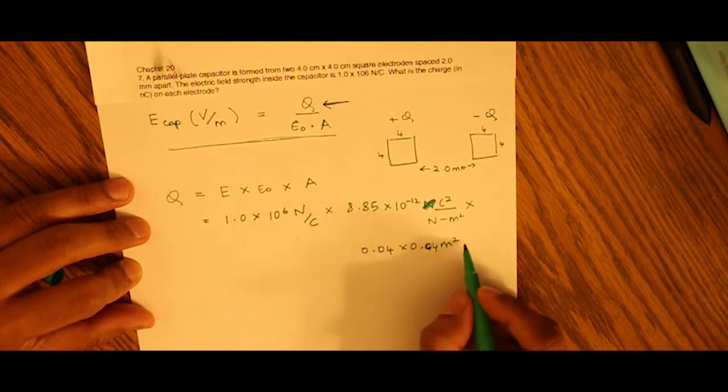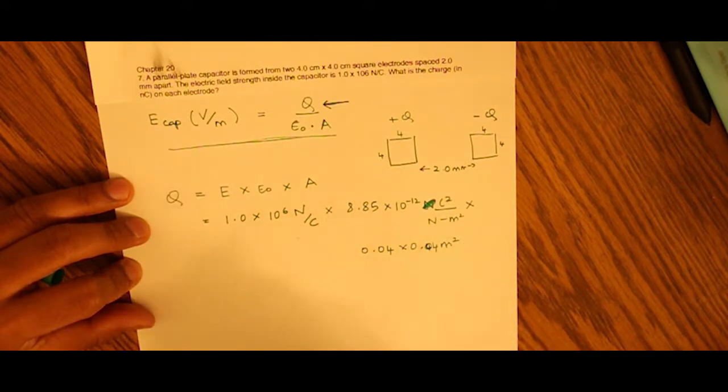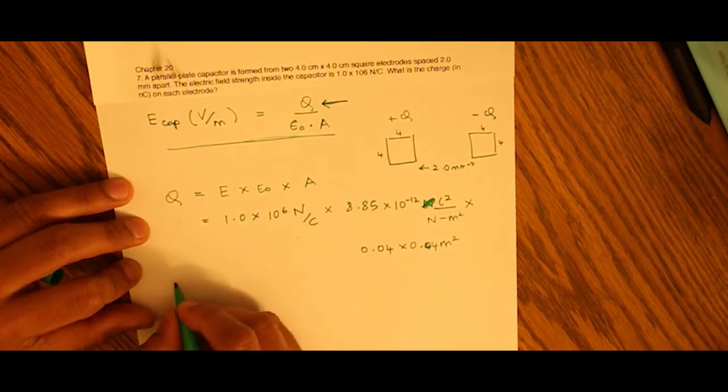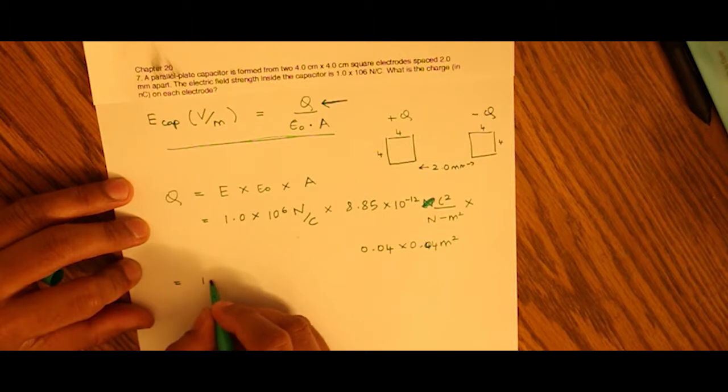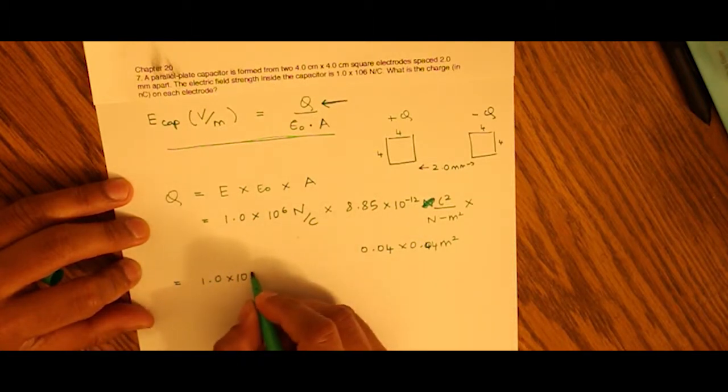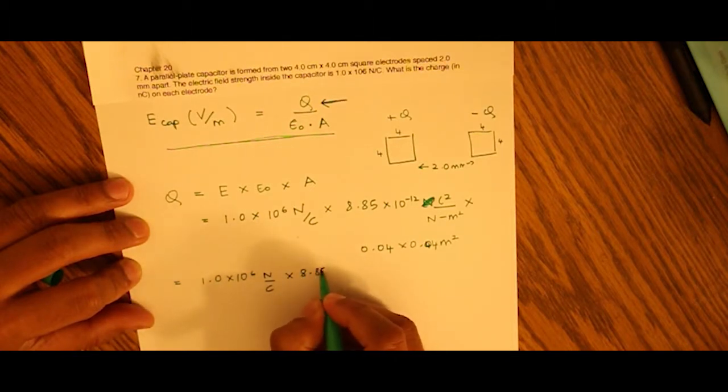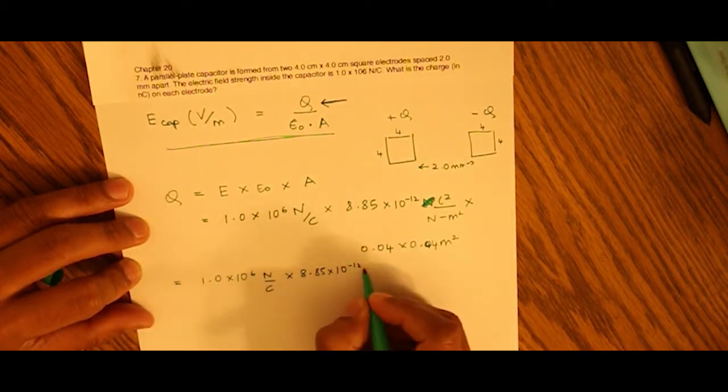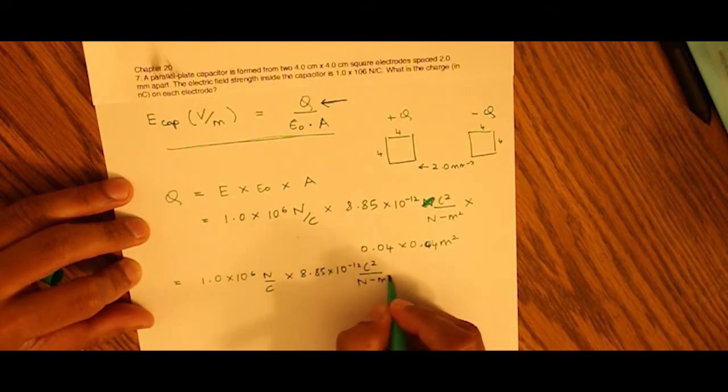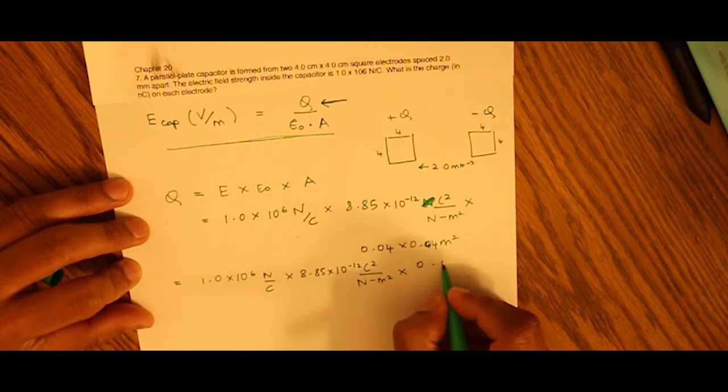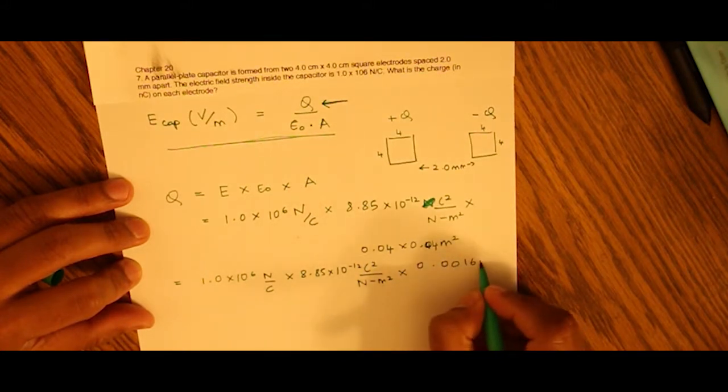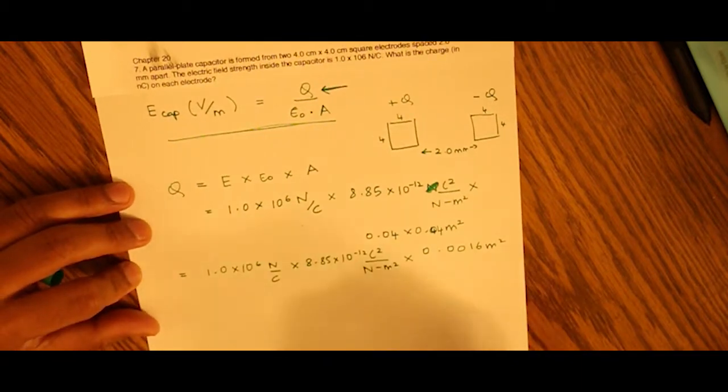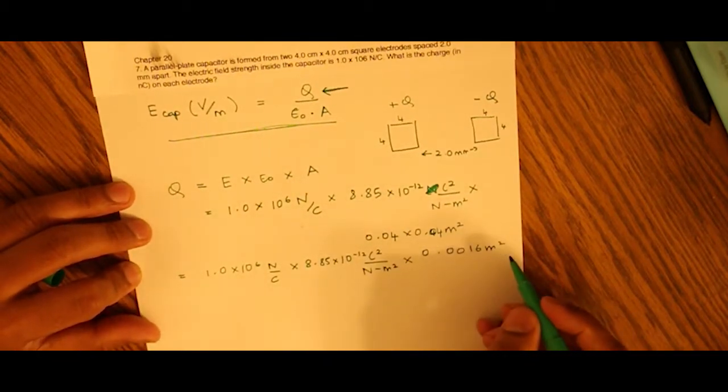So this value is 0.0016 m². Let's write that again. We have 1.0 × 10^6 N/C times 8.85 × 10^-12 C²/N·m² times 0.0016 m².